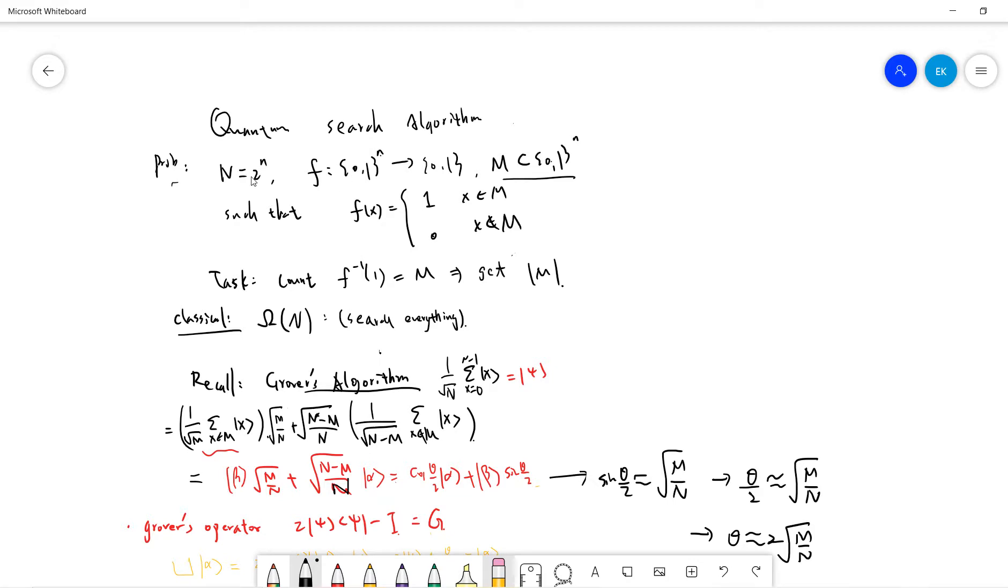Basically we have 2^n things, and then we map each instance to 0 or 1, basically true or false, and that M will be a subset of this 2^n. So such that if x belongs to M is 1, if x does not belong to M is 0.